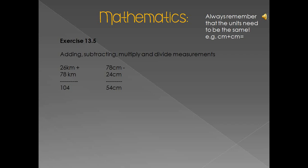So you can only add a kilometer to a kilometer, a meter to a meter, and a centimeter to a centimeter. That is for adding, subtracting, multiplying, and dividing. In this activity the units are the same, so it's just basic sums. The first one: 26 kilometers plus 78 kilometers equals 104 kilometers. The second one: 78 centimeters minus 24 centimeters equals 54 centimeters. And then you have multiplication and division.